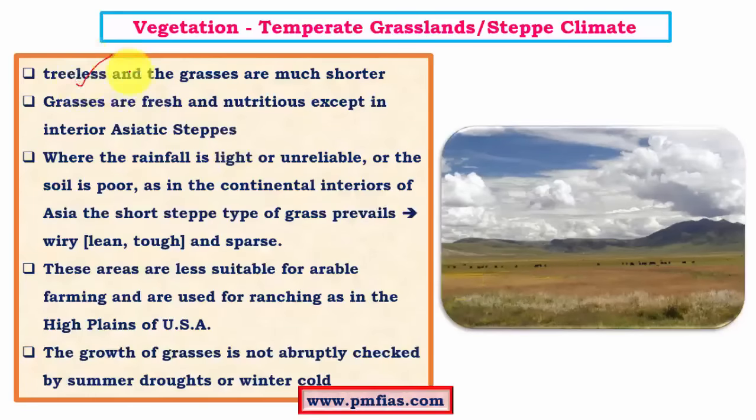Coming to vegetation, the most important feature is treelessness. Comparing with savannah type of climate: in savannah there are grasslands as well as trees like acacias that are comparatively taller and widely distributed, whereas in steppe climatic conditions trees are almost absent. This is one major difference between savannah and steppe. The grasses in steppes are short, nutritious, and good for pasturing, whereas in savannah the grasses are very wiry, bunchy, rough, and very tall like elephant grass, and are not suitable for grazing.